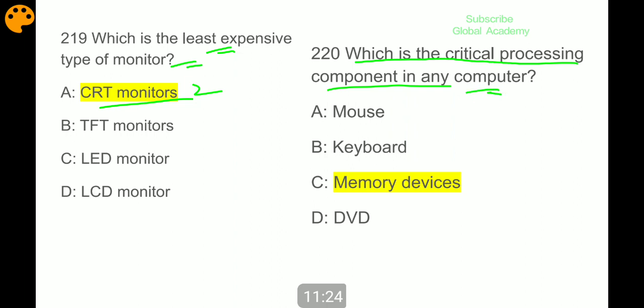Last question: which is the critical processing component in any computer? Memory devices. So students, we have completed the third part. We'll discuss 25 more related questions, 150 to 200 questions, and then we will start MS Office. Okay, thanks, best of luck, and as always, God bless you all.